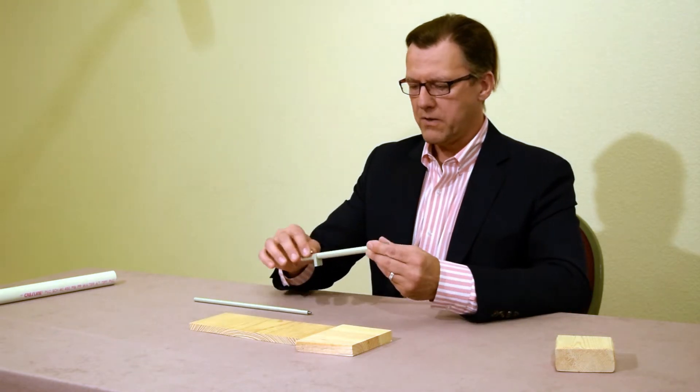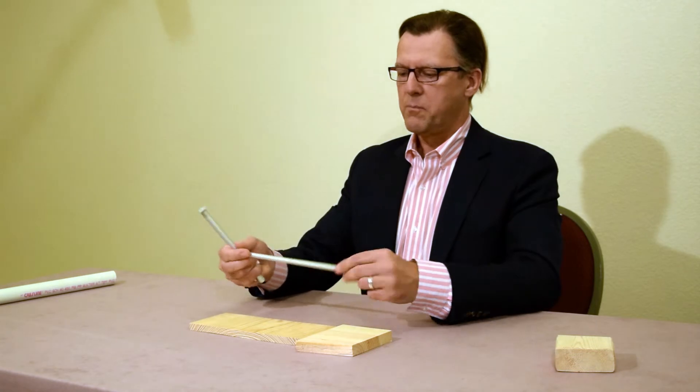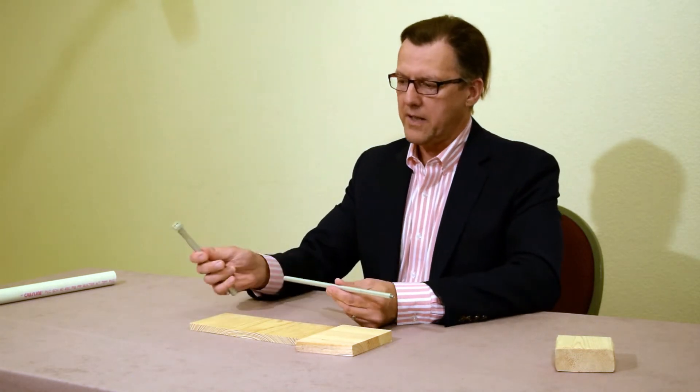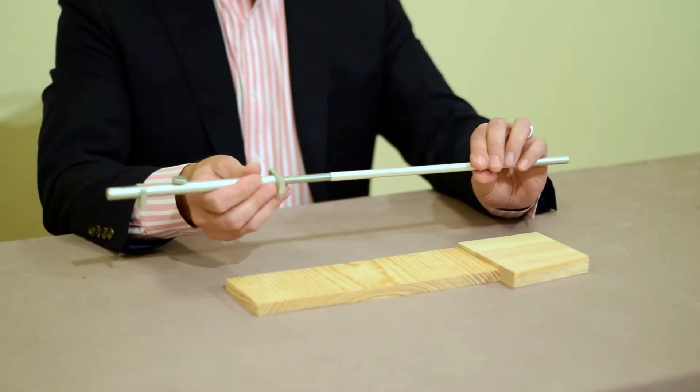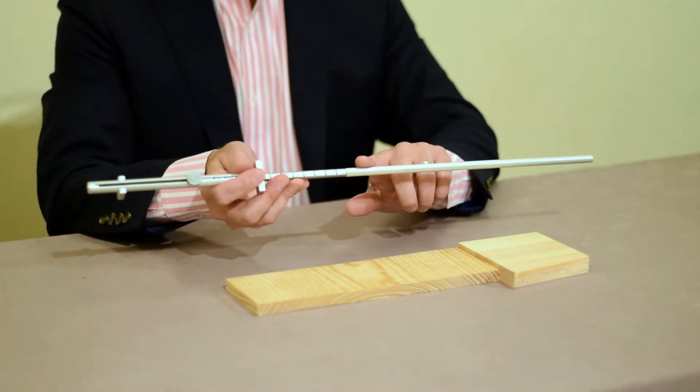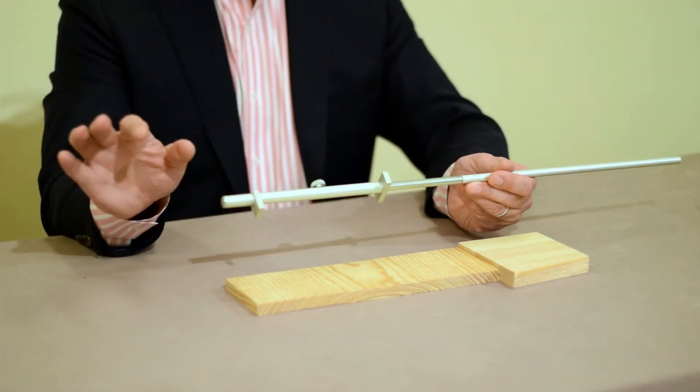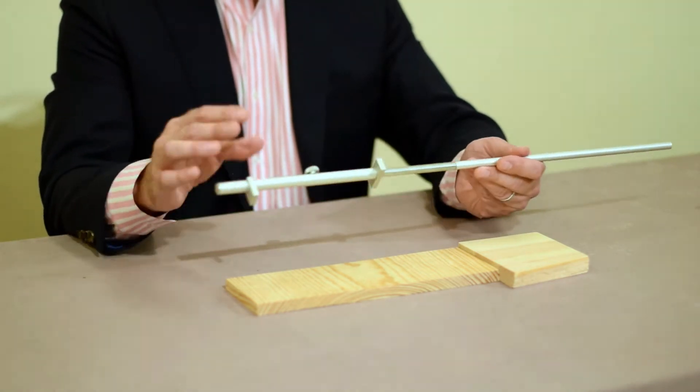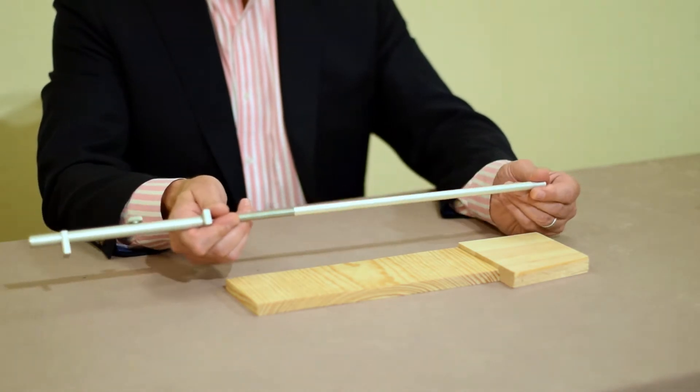What I'm going to do is use a really cool part of the click rule kit, and that is called an extension. Now, what this does is gives me a built-in 12 inches. Just like from the front of the fence to the front of the hook is a built-in 6 inches, now I have a built-in 12.